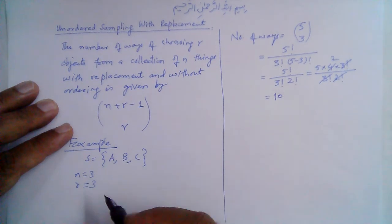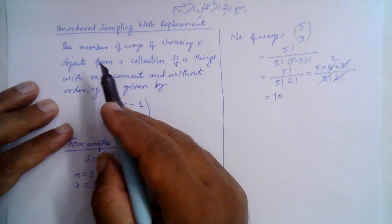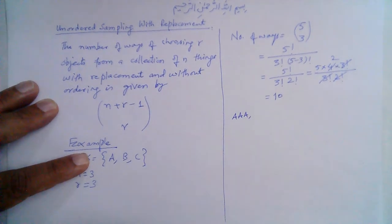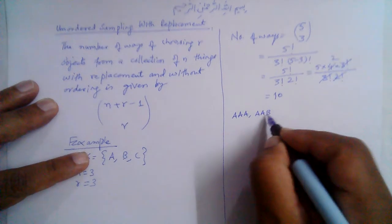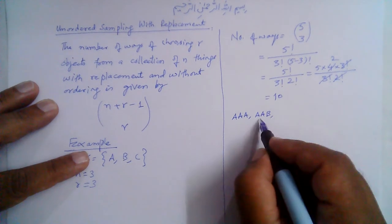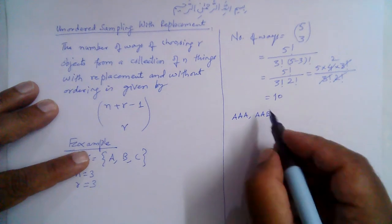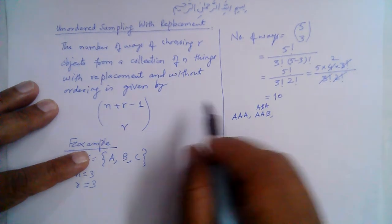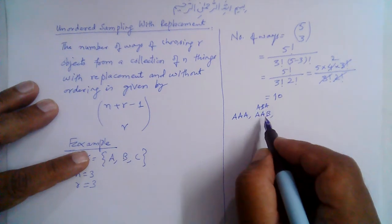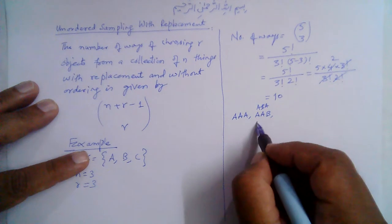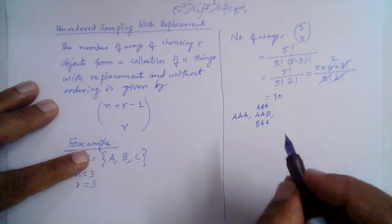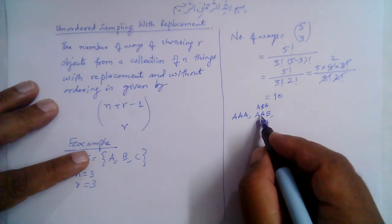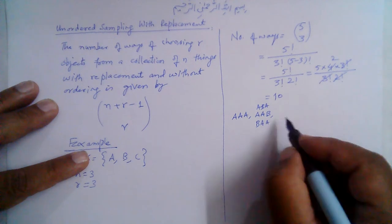Let's try to list them down. Note that the samples are unordered and repetition is allowed. For example, a can be chosen three times: {a, a, a}. Then we can have {a, a, b}. Once we choose {a, a, b}, we cannot also choose {a, b, a} or {b, a, a} because this is unordered sampling — they are all the same sample. So we list: {a, a, a}, {a, a, b}, {a, a, c}.